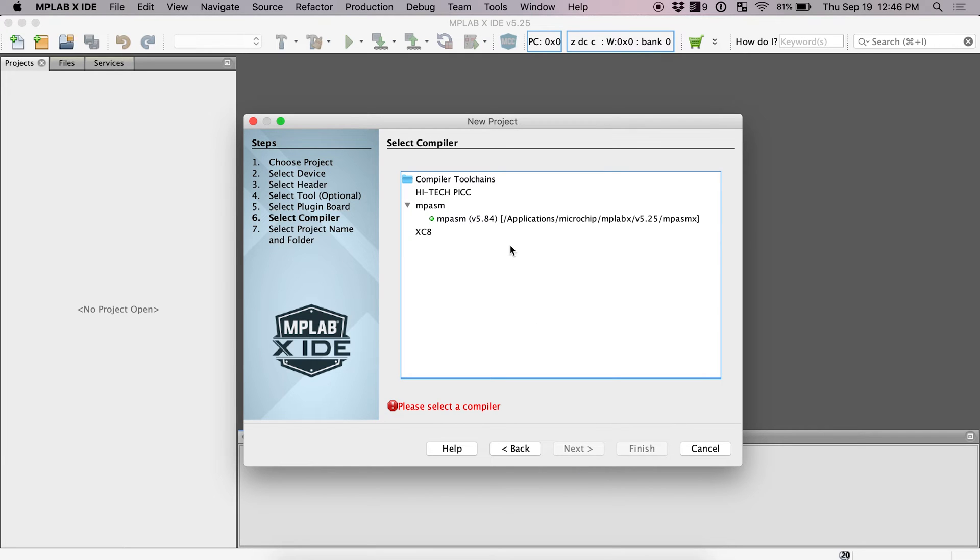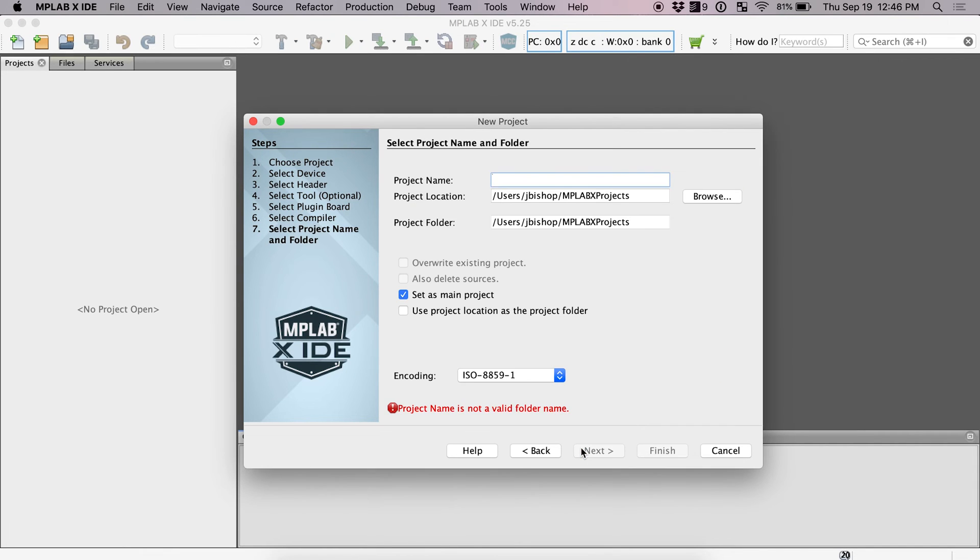Now we will use MPASM, so basically MP Assembly for moving on. And I'm just going to call this Primero because it is our first project and I'm going to keep that set as our main project.